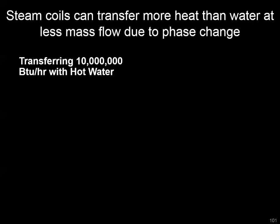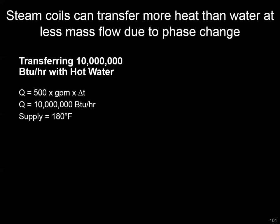Why might you want to use steam versus hot water? Like we saw with cooling system configurations, you're able to move a lot more heat energy with a phase change. To throw some numbers at that — say we wanted to accomplish 10 million BTUH with a hot water system. Using the heat exchange equation for water at typical HVAC conditions and saying we wanted to meet that 10 million BTUH load, we'd probably supply water at about 180°F returning at about 160°F, giving a delta T of around 20°F. That would put the flow at 1,000 gallons per minute.